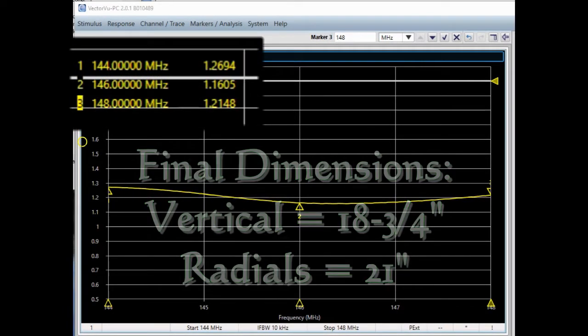And so this is what our antenna looks like. The bottom end of the band, we have a 1.3 to 1. At the center of the band, we have 1.16 to 1. And at the top of the band, it's 1.2 to 1, quite an acceptable response from this antenna.